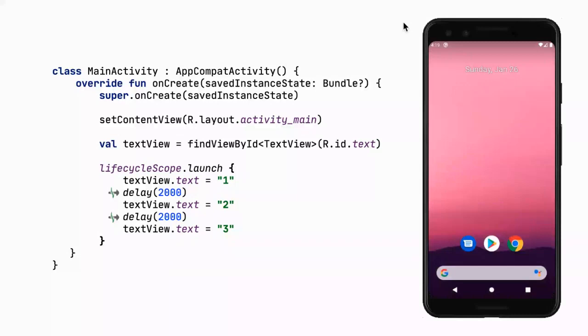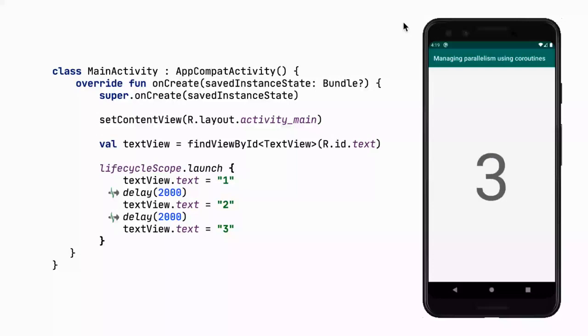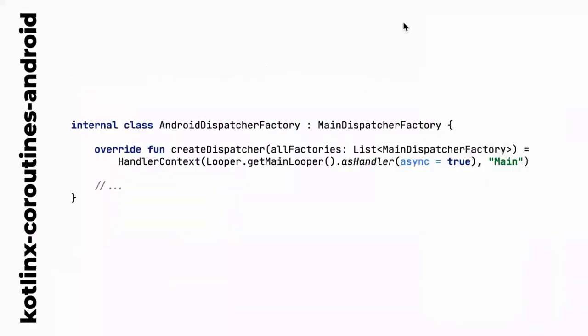Running this example again, we can see 'one' after two seconds, 'two' after two seconds, 'three' — because the main thread is just suspended, not blocked. lifecycleScope uses the main dispatcher by default.